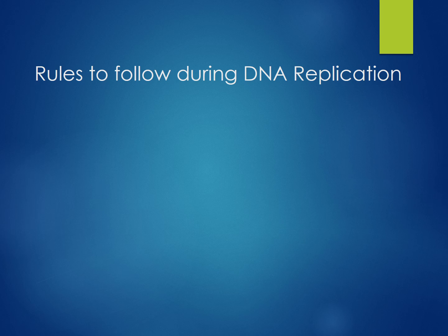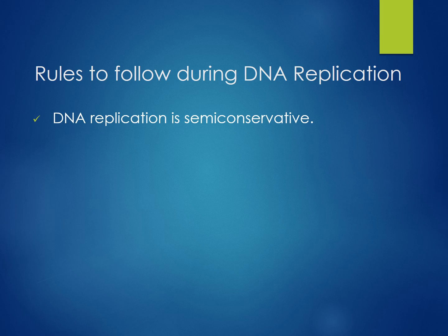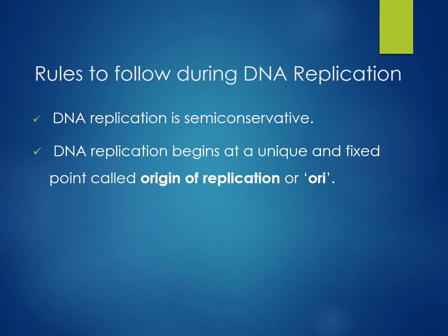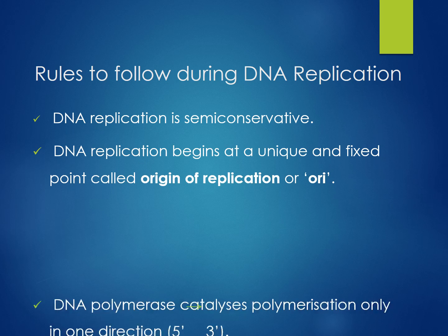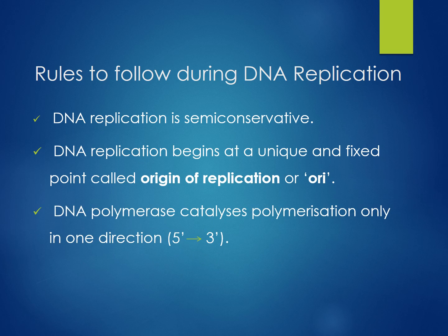Now we will discuss the rules followed during DNA replication. The first rule is that DNA replication is semi-conservative — we will discuss this in detail ahead. The second rule is that DNA replication does not start randomly; there are fixed defined points on the DNA strand called the origin of replication, or ori, from where replication starts.